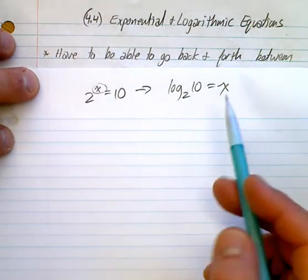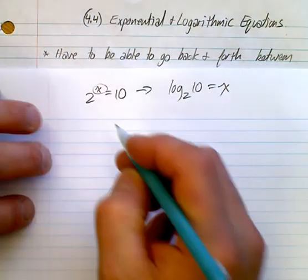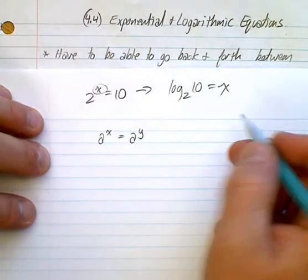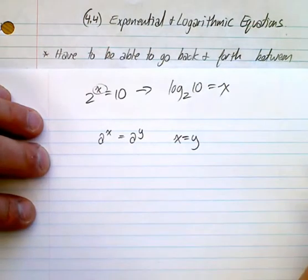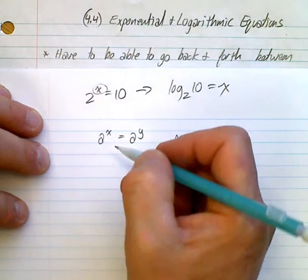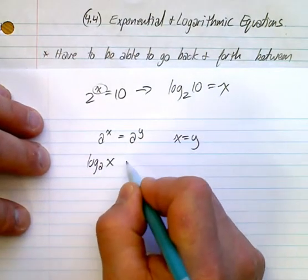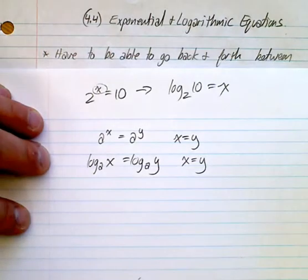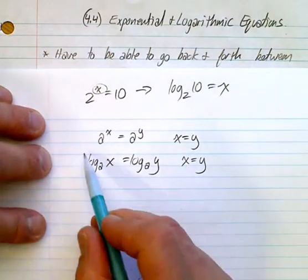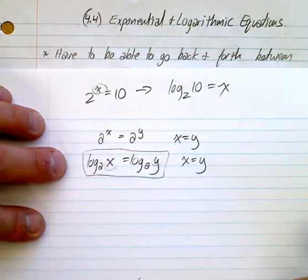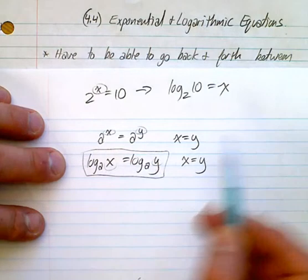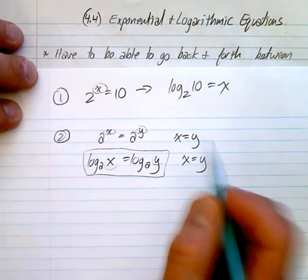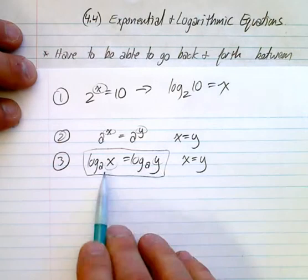You have to be comfortable going back and forth. A couple other things: if you have a to the x and a to the y, this is true if and only if x is equal to y. Another thing: you have log base a of x equaling log base a of y — this is again true if and only if x is equal to y. So if you have the same base, those things have to be the same. Just like if you have the same base, those exponents have to be the same.